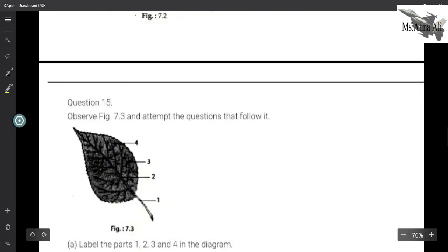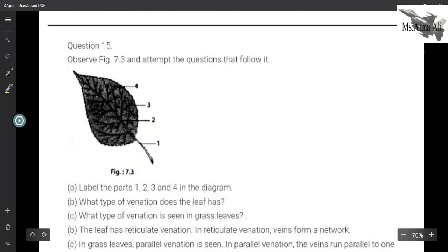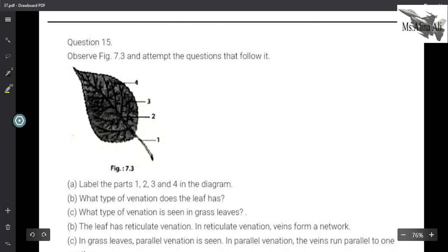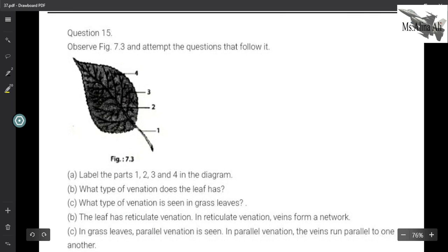Let's come to question 15. Observe this figure and attempt the following questions. Now label parts 1, 2, 3, 4. So let's first label it. This part is our stem. So this is known as your petiole. And the two part I think that is the mid rib because there is a black and white photo, it's not clear. So it's mid rib I think. This is your lamina.